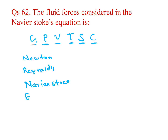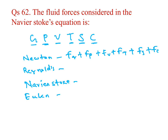Then Euler. In Newton's equation all forces are there: gravity, pressure, viscosity, turbulence, surface tension, and compressibility — all are there. In Reynolds equation, you cut the last two forces, you will get Reynolds equation. Then you cut the last one more, you will get the Navier-Stokes equation.